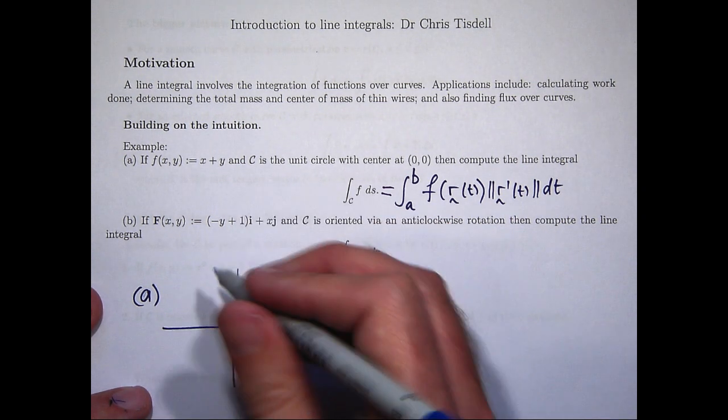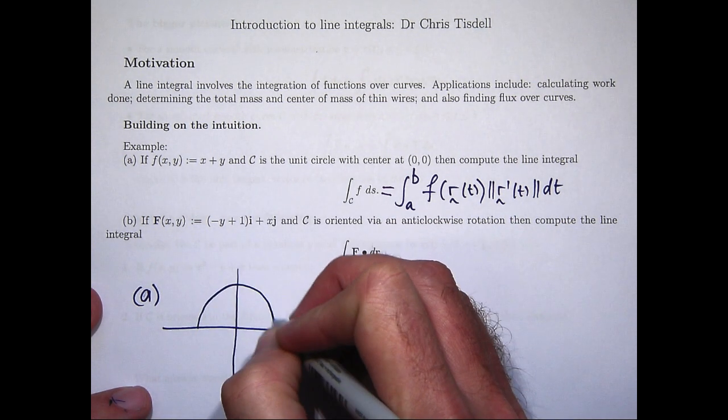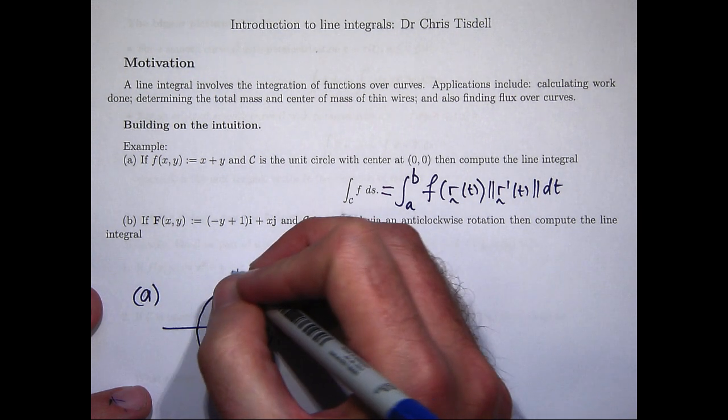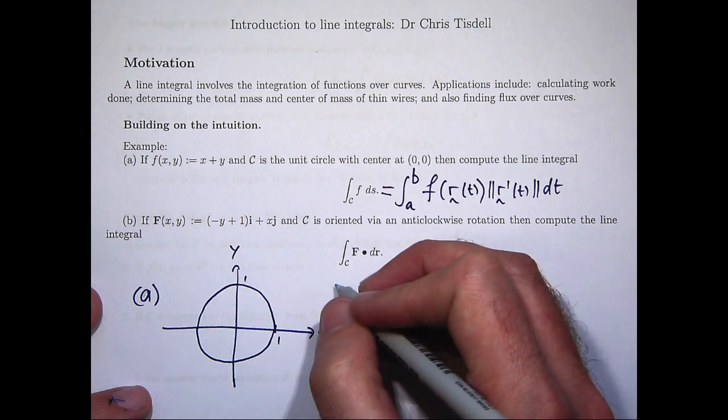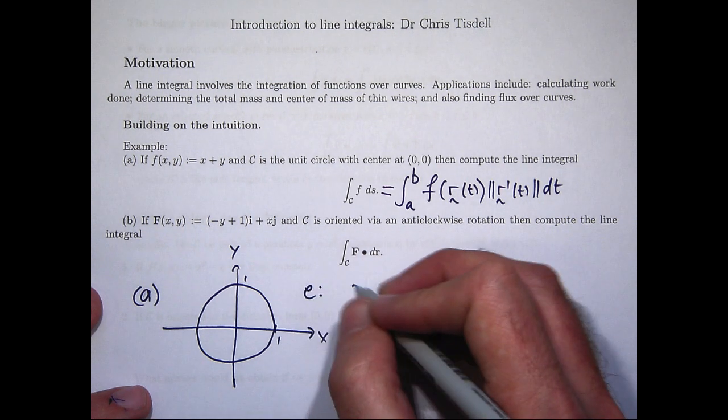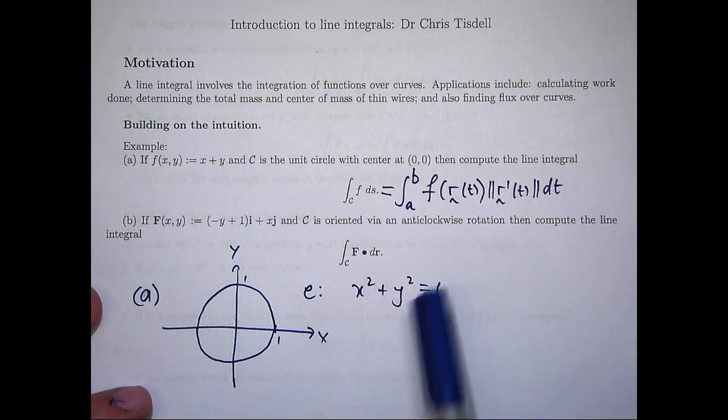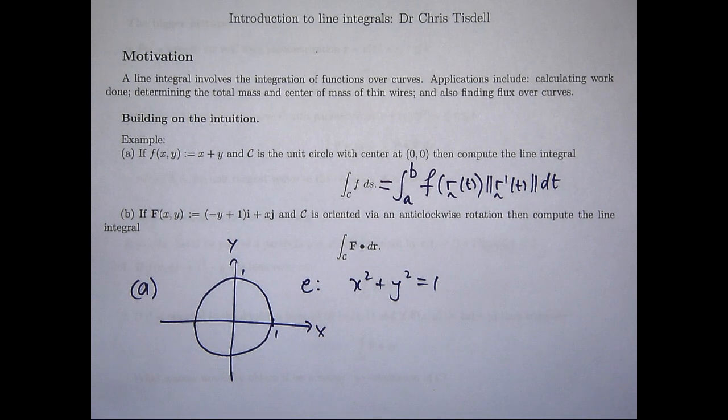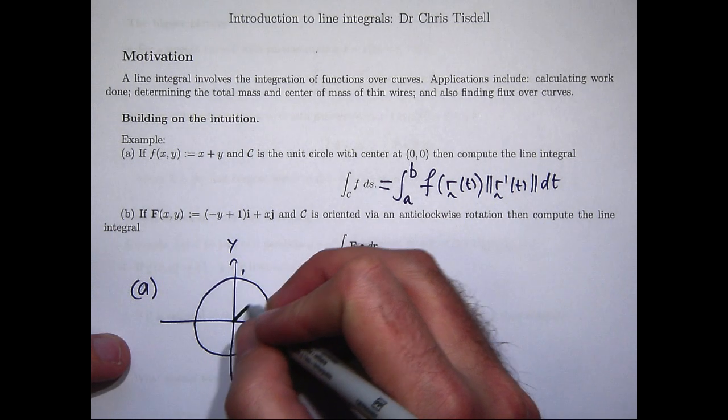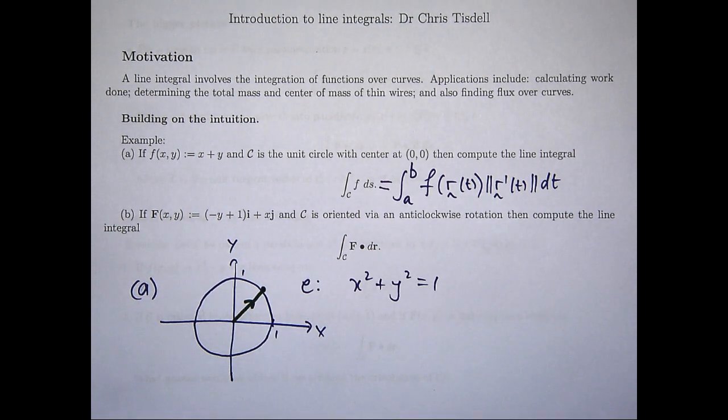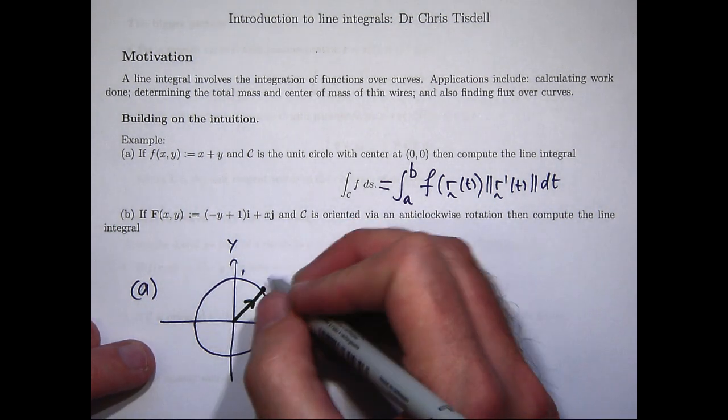Let's draw the unit circle with center at the origin in the xy plane. Now, I know that the equation for this unit circle is just x squared plus y squared equals 1. Now, what we're going to do is describe the circle using a vector function of one variable.